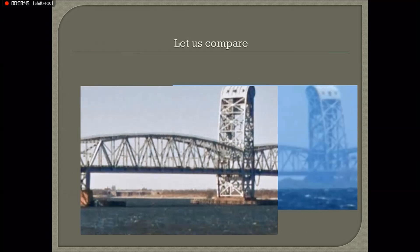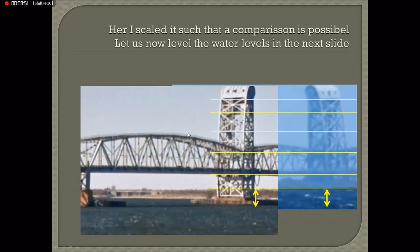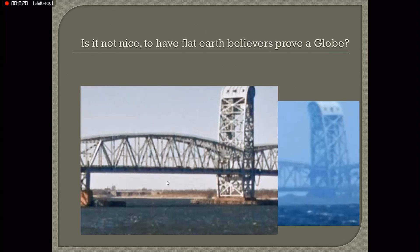It took me some time, but I managed to scale both images so that the size here matches exactly, joint to joint, and the distance to the lower part of the deck is the same. We now see that the water level in the video is higher — this whole part is missing. By making the water levels equal, as on a flat earth all water is level, we can only come to one conclusion: the whole bridge is lower because a substantial part is behind the curve of the earth.